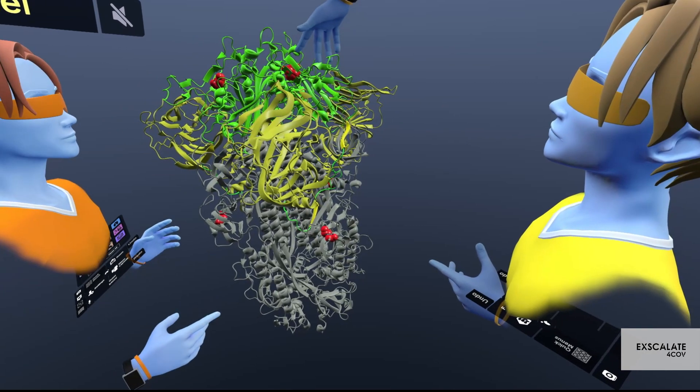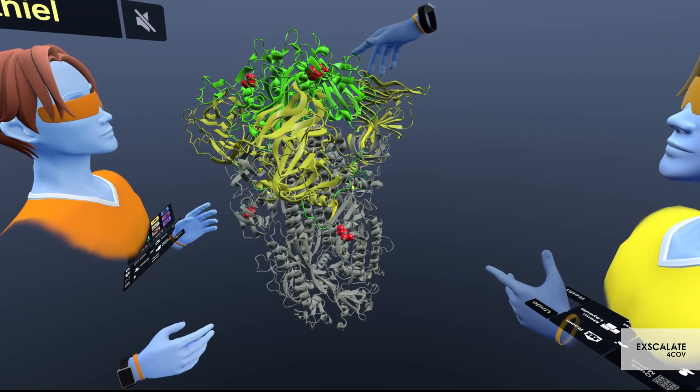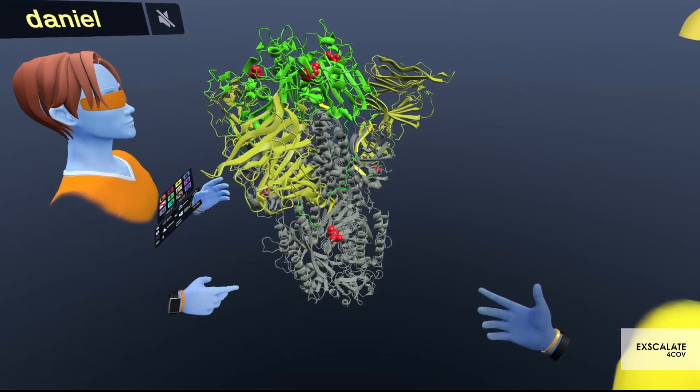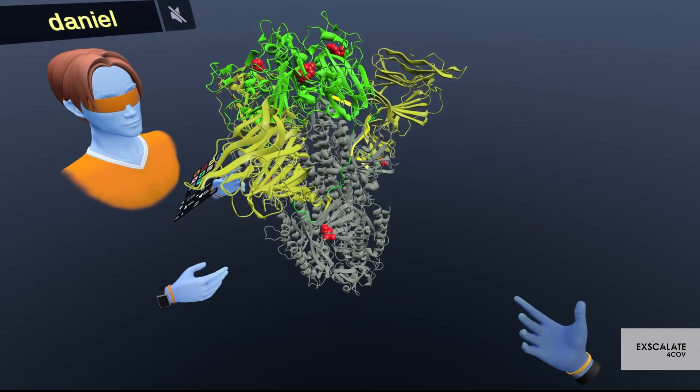But I think what's particularly important is this one here on the top so Carmine and Daniel do you want to share a little bit more about these mutations and what it might mean for COVID-19?